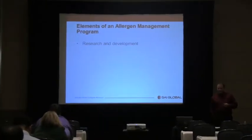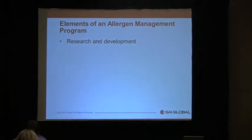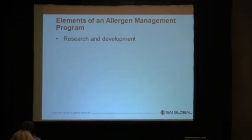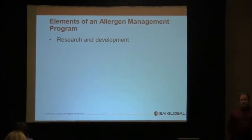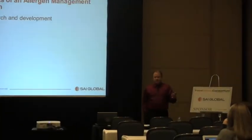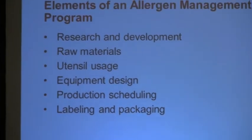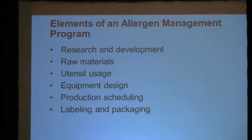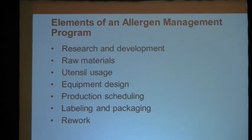So what are the elements of an allergen management program? First and foremost, R&D — can we formulate products without allergens? If you don't have to use casein, gluten, or peanuts, find something else. Raw materials — identification, storage, et cetera. Utensil and equipment storage and identification. Equipment design. Production scheduling. Labeling and packaging. Rework — where does rework fit in? We're going to get into each of these specifically, though our main focus will be on verification and validation.